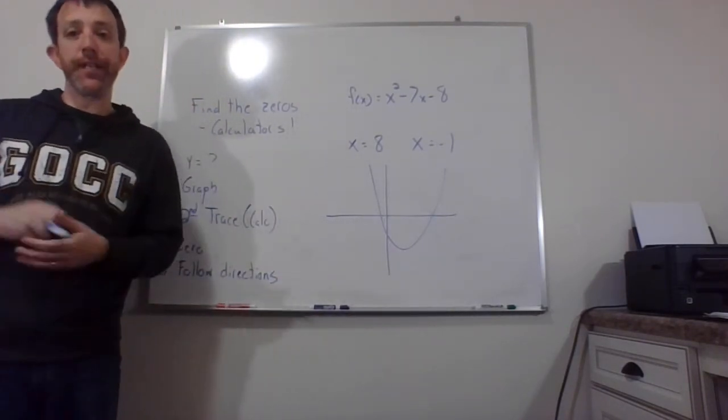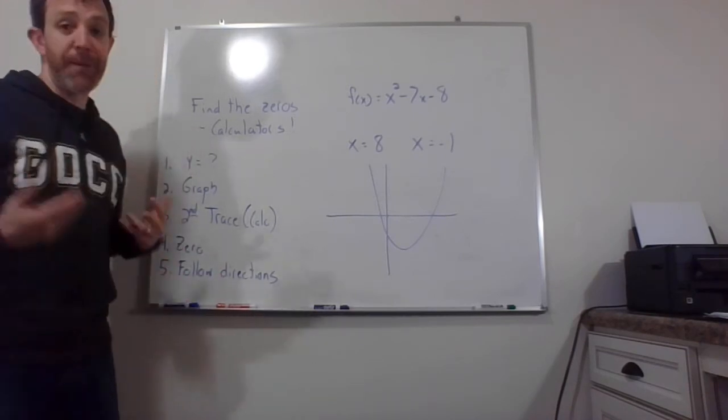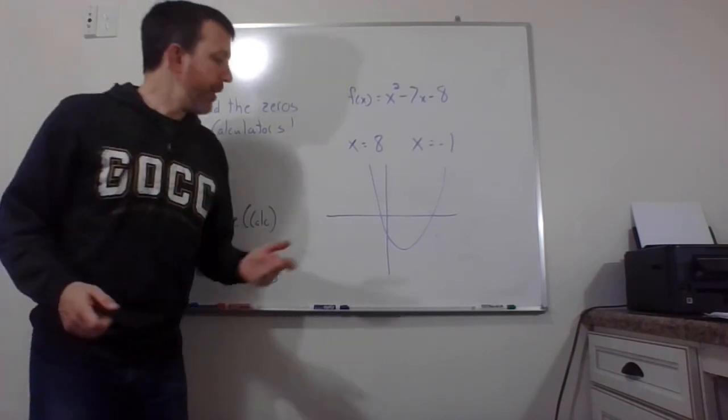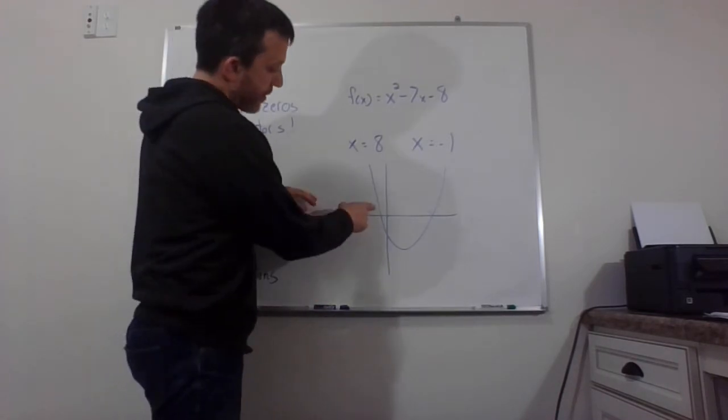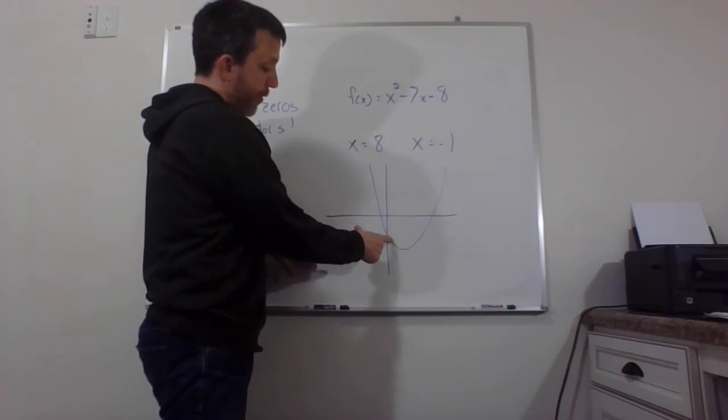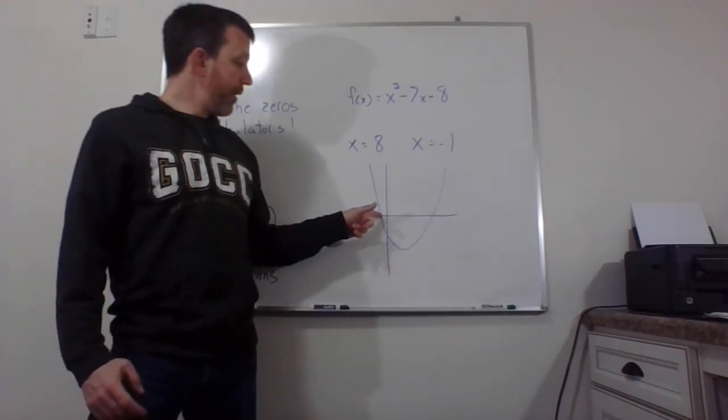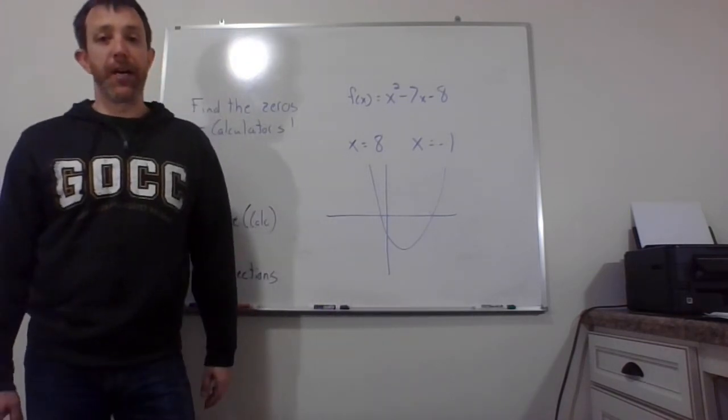But your calculator needs a little bit of help trying to figure out which zero you're looking for. So you're going to have to do them separately. You can't do them both at the same time. So you put a left bound, which means you're just going to move the little blinking cursor to the left side of the zero that you want. Then it'll ask you for a right bound. So you put it on the right-hand side of the zero that you want. And then it wants a guess. And you just get it as close as you possibly can.